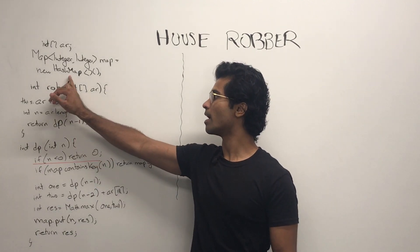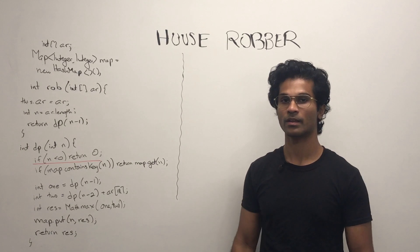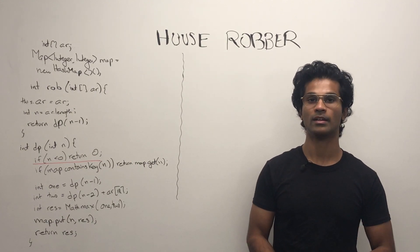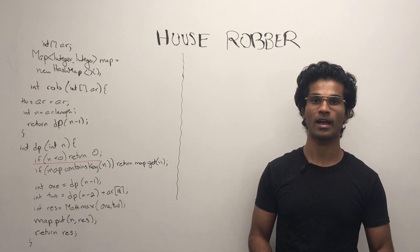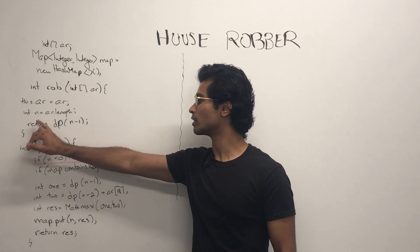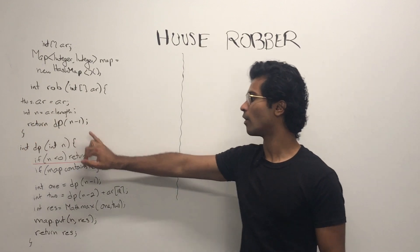So I've initialized the map which is used for caching. k is going to be the dp of i. The i is actually going to be the key and the value is going to be dp of i. And here's a global variable for the array and recursively call it.